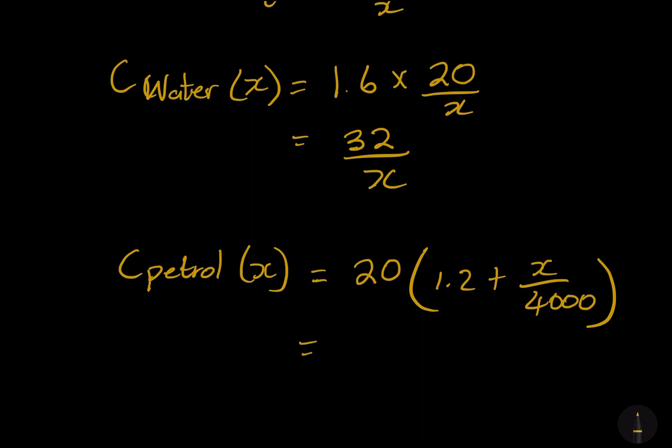In this case, we would simply say 20 multiplied by 1.2, so that would give us 24, plus - if we say 20 over 4000, you see that two goes into itself once and then it goes into four, so I will get x over 200. So that will be x over 200. That's the easier way of expressing that.